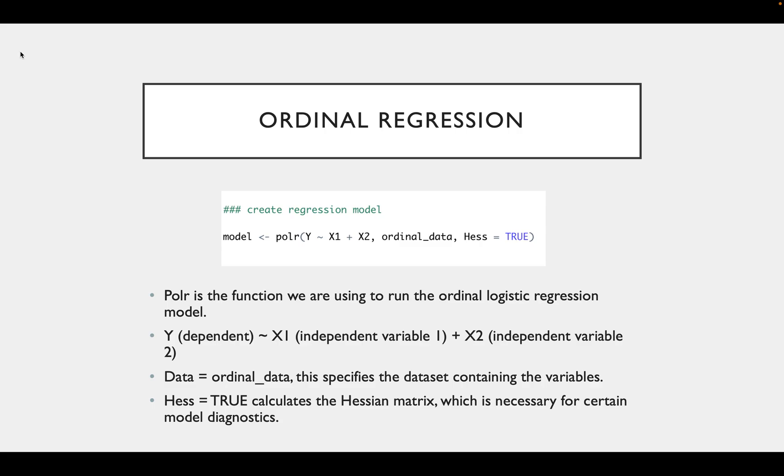This is the code we use to run the regression. polR is the function used to run an ordinal regression in R. Then we have the formula Y, which is our dependent variable, X1 plus X2, which are our independent variables.